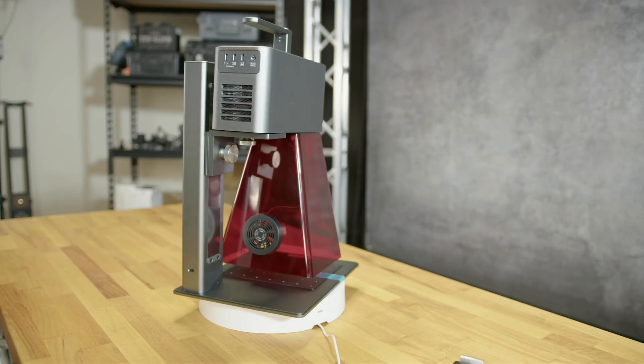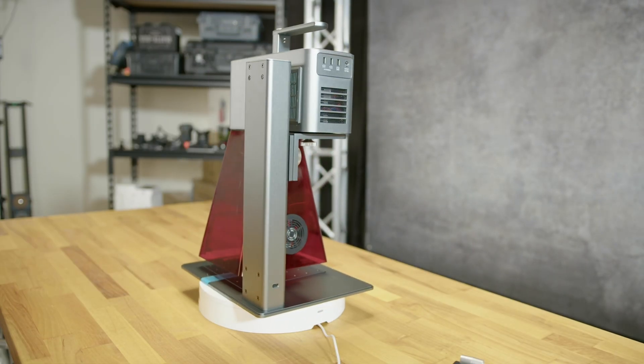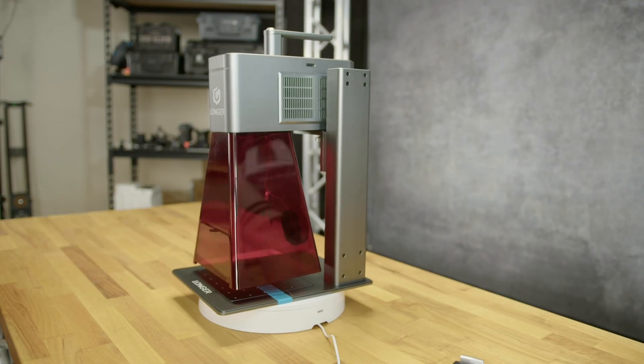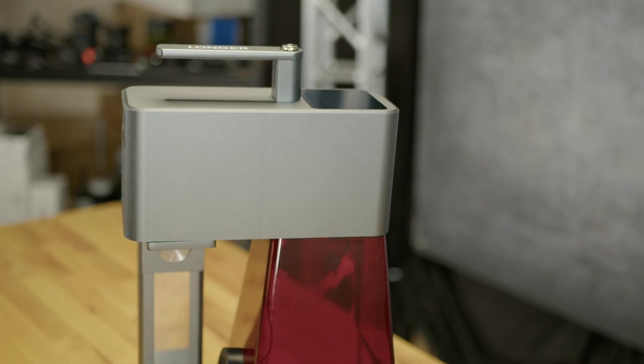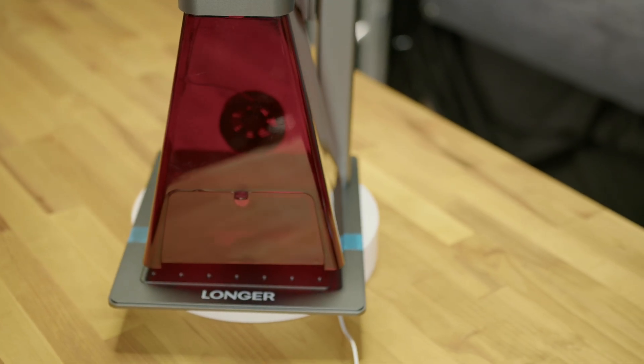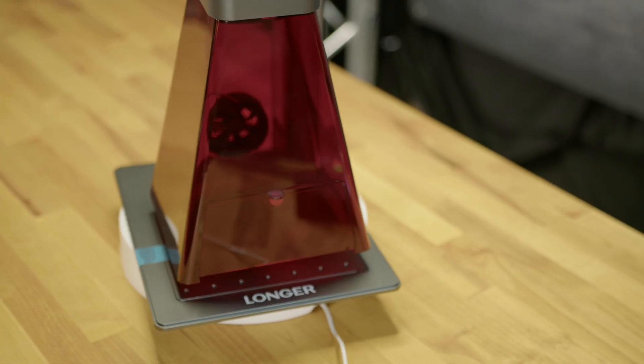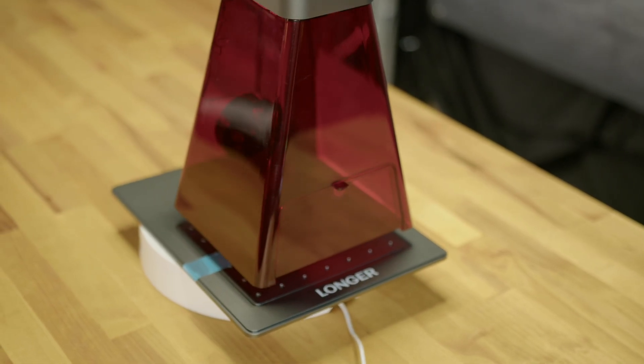One thing also to note is if you can see here, the fan on the back is now internally powered when you connect it to the base, so that's one less cable. It also includes a door on the front so you can get access to the materials without having to take that off. It's such a nice little feature on the shroud.